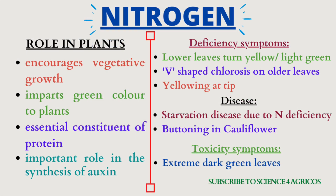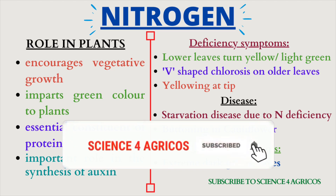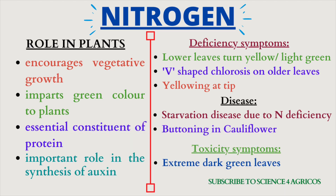Let's start with nitrogen. Nitrogen encourages vegetative growth, imparts green colour to plants, and is an essential constituent of protein. It plays an important role in the synthesis of auxin. Deficiency symptoms are usually that lower leaves turn yellow or light green, and V-shaped chlorosis is noticed on older leaves, with yellowing at the tip.